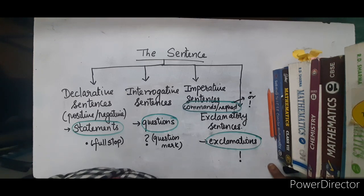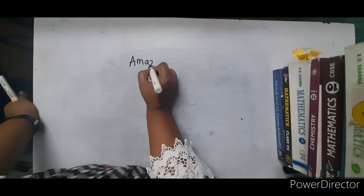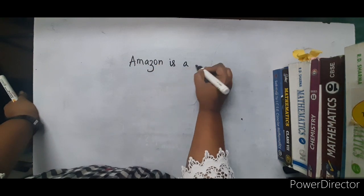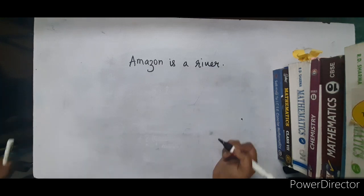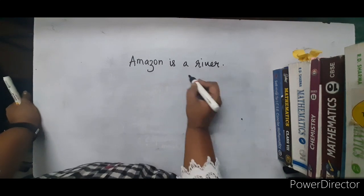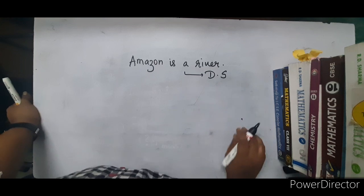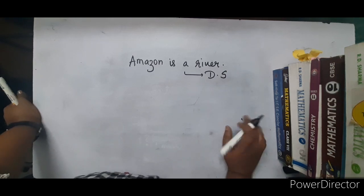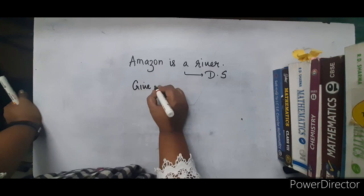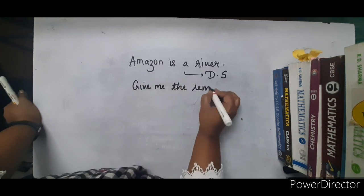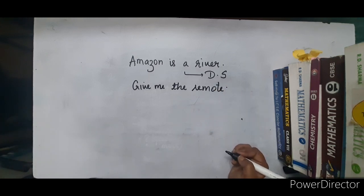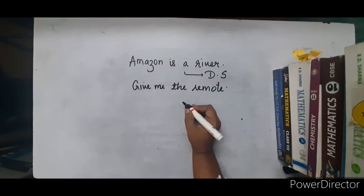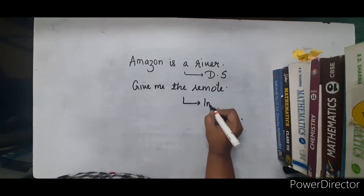We will quickly see a few examples so that we can identify which type of sentence we are talking about. For example: 'Amazon is a river.' Which type of sentence is it? It is a declarative sentence, because it is a proper statement ending with a full stop. Another example: 'Give me the remote.' This is a command, so it has to be an imperative sentence.